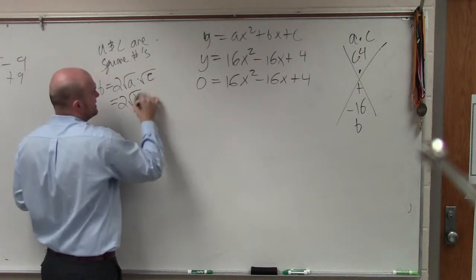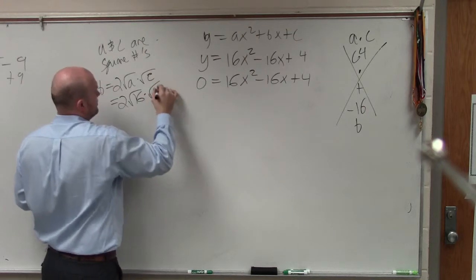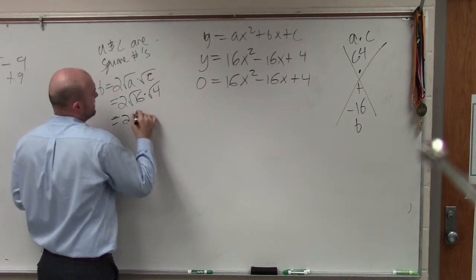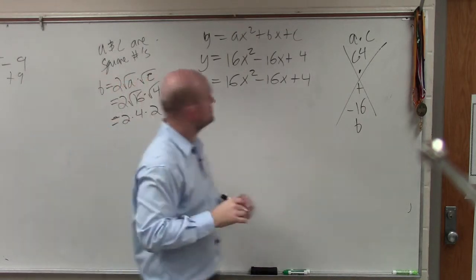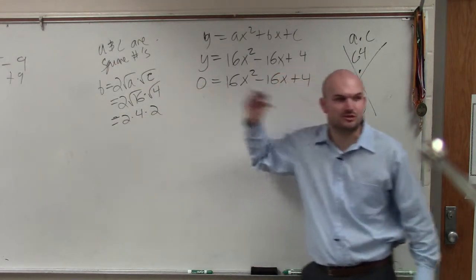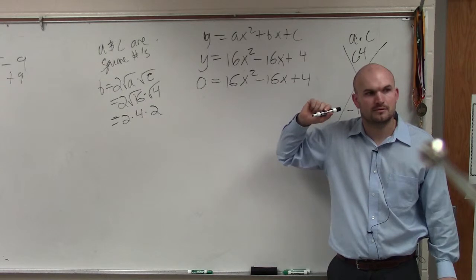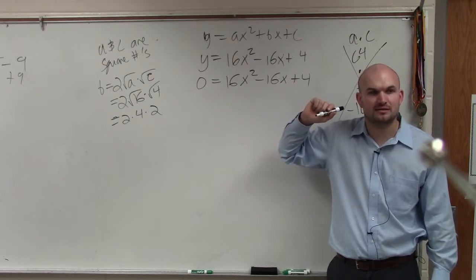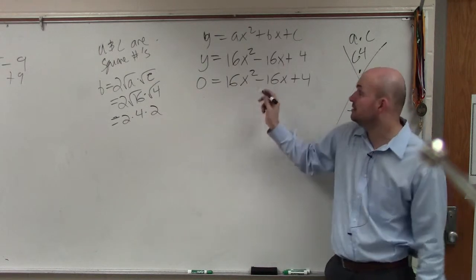What is the square root? What's a? 16. What's c? 4. 2 times 4 times 2. Does our middle term equal 2 times 4 times 2? 2 times 4 is 8 times 2 is 16. So yes.